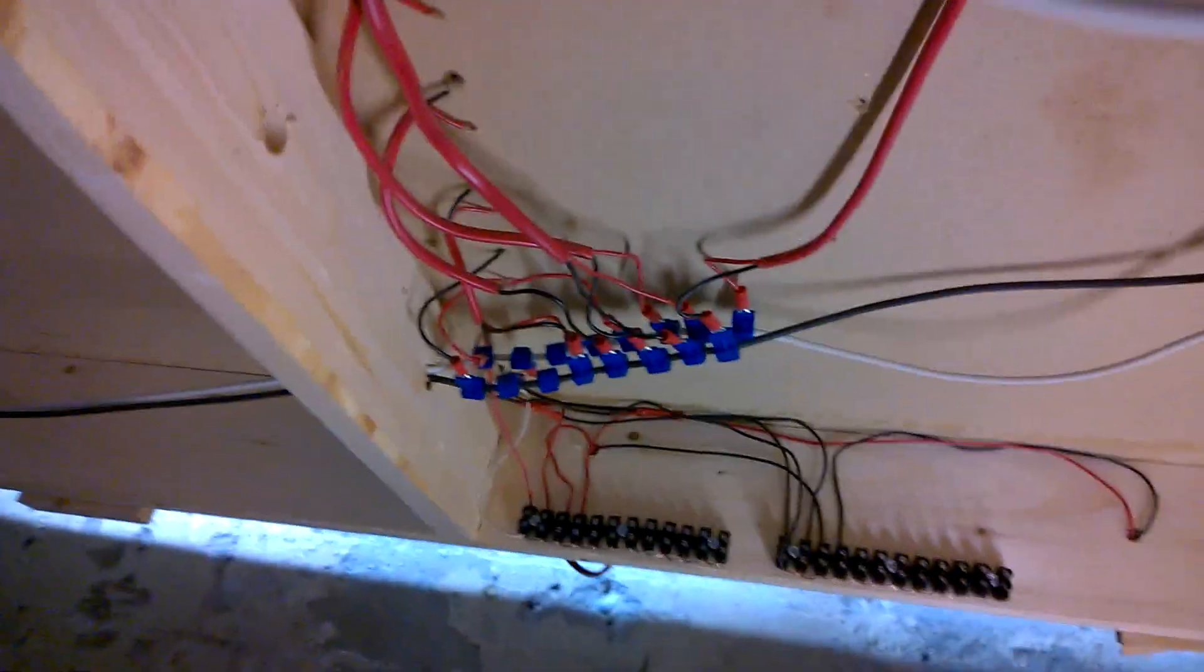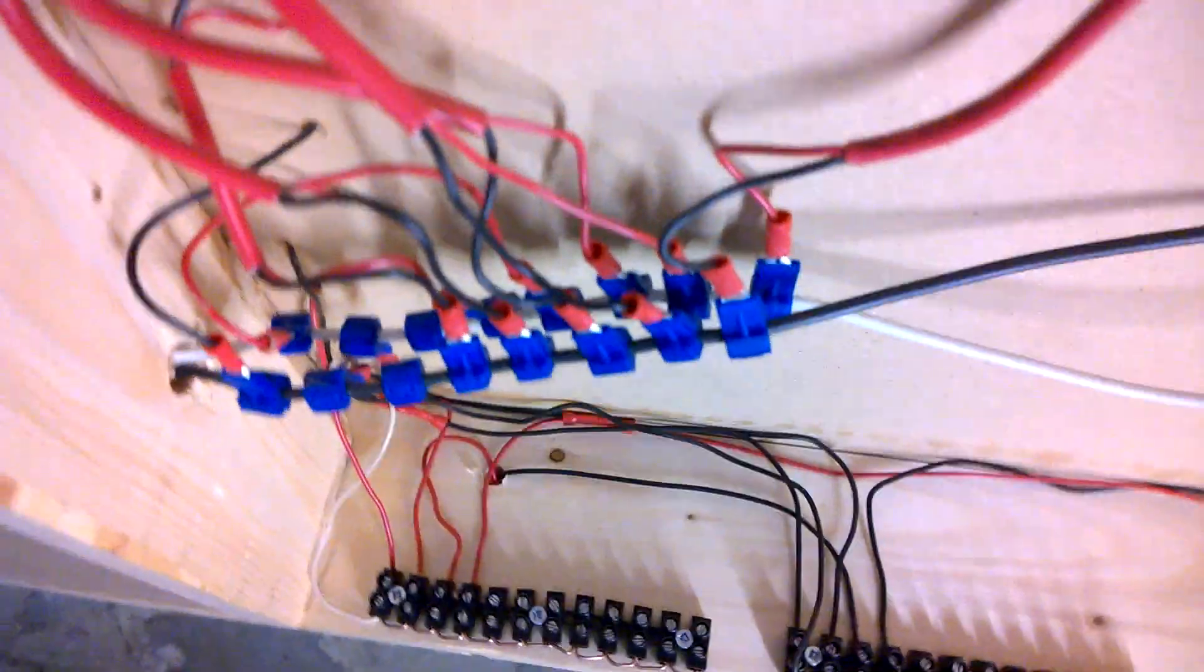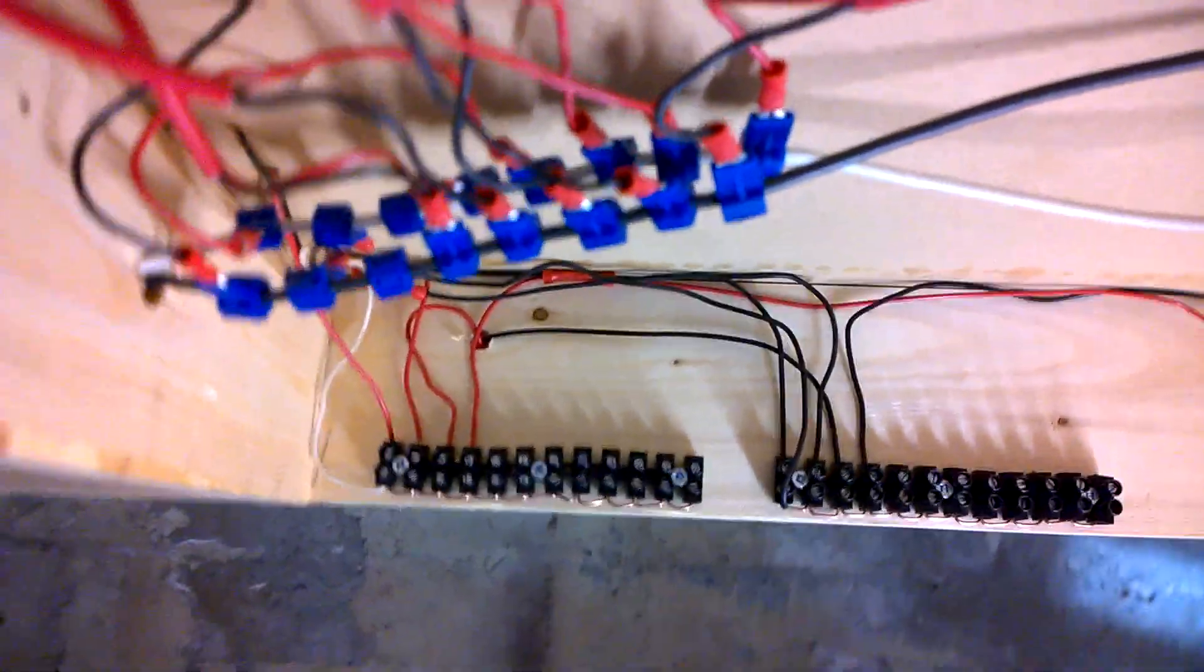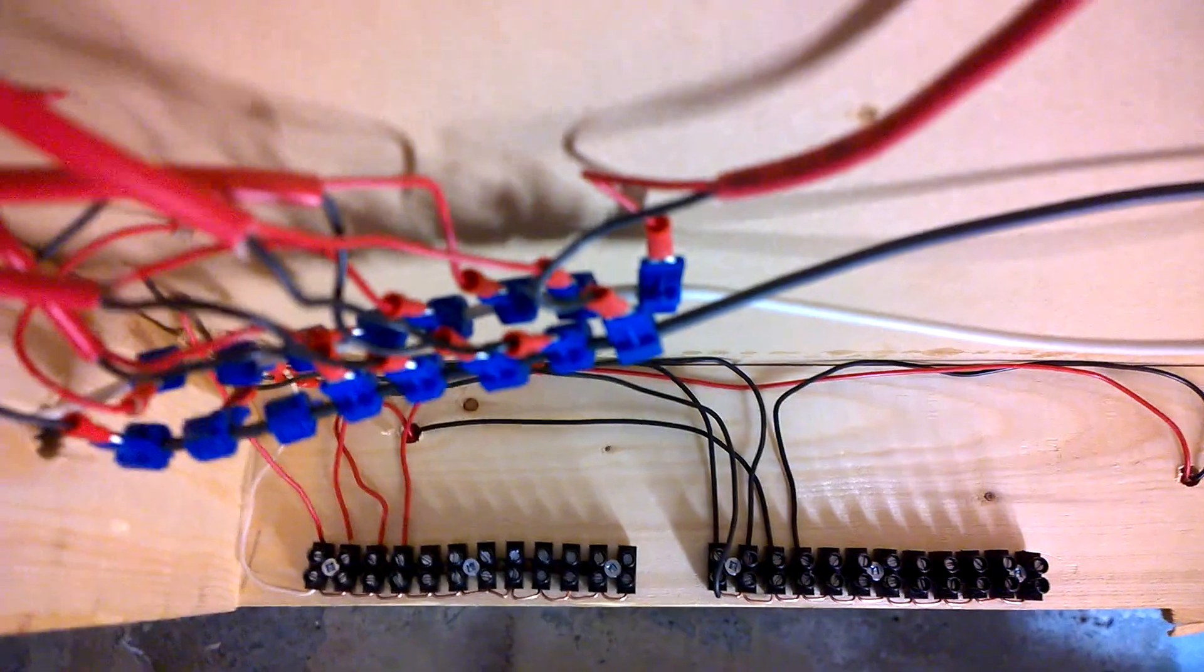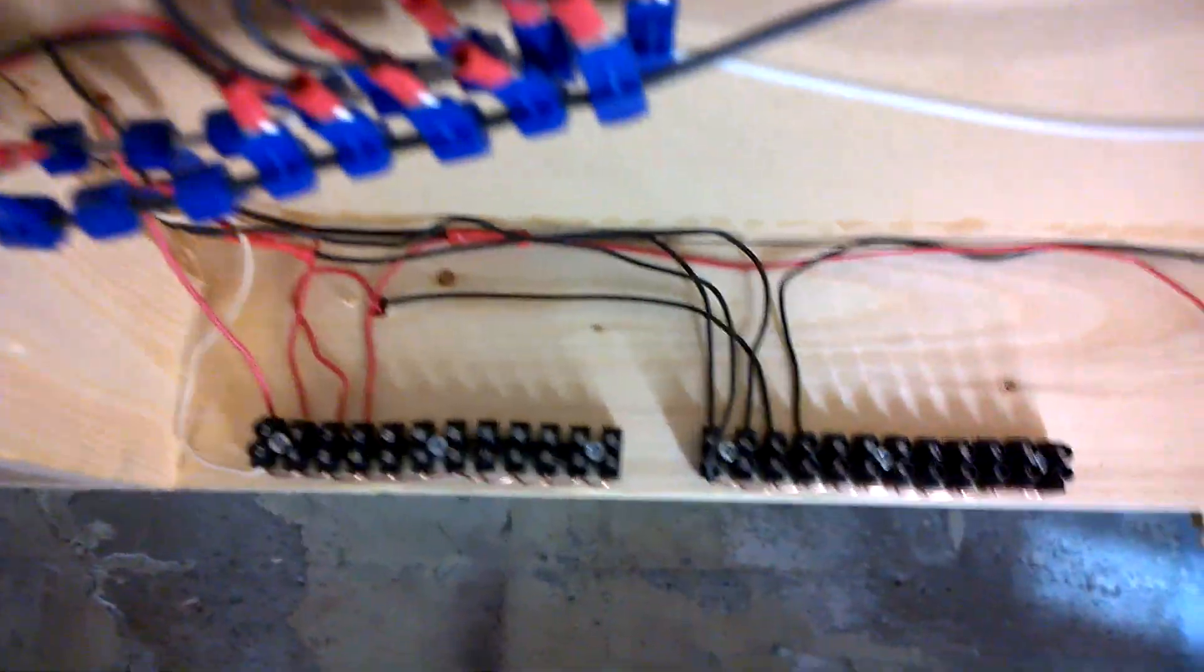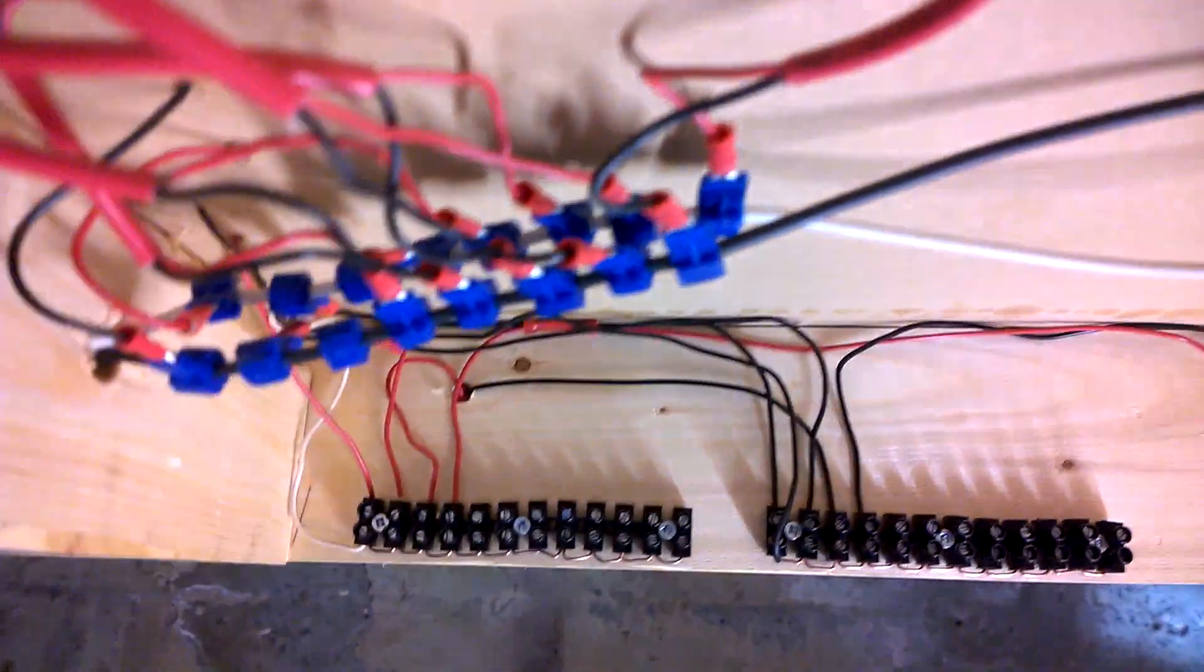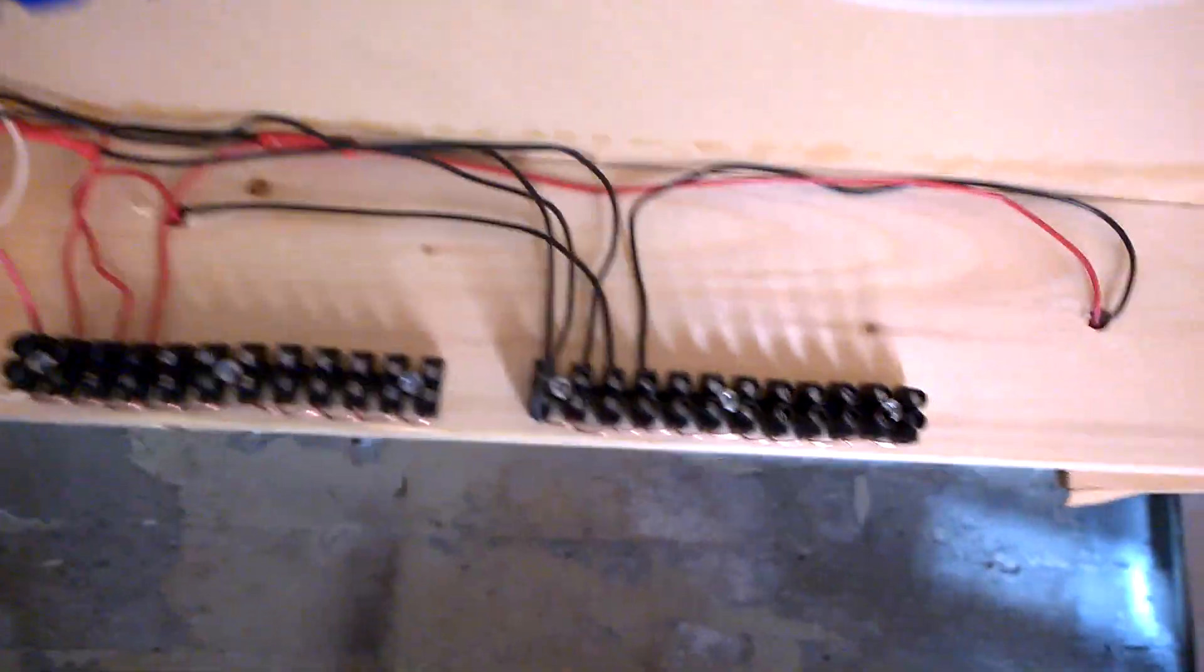All righty. Joe G was asking how I wired underneath my layout. Now originally, you can see this, I went with the suitcase connectors onto the main bus line. I didn't think that was such a great idea. I went with the bars. I haven't taken the suitcase out—I mean it's not necessary to take them out—but from now on I've been doing the bar onto the main bus line.